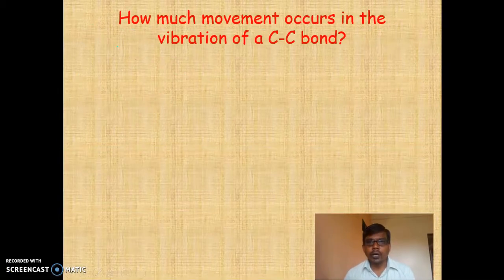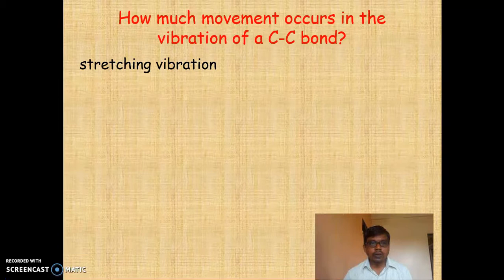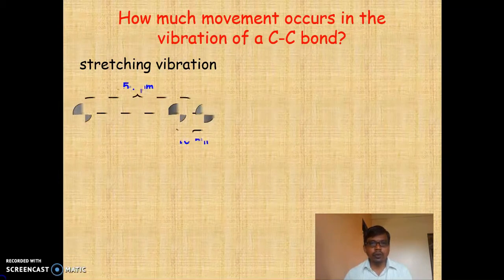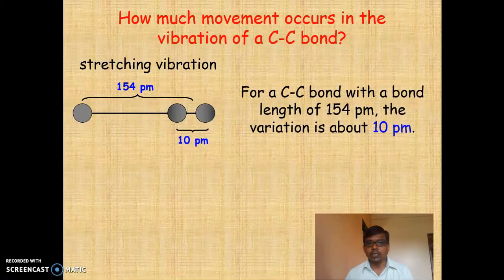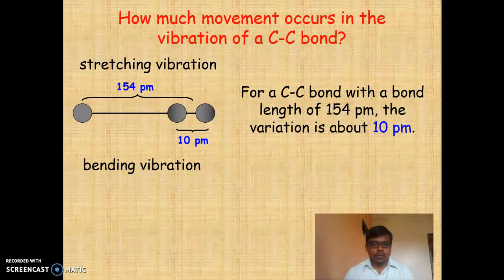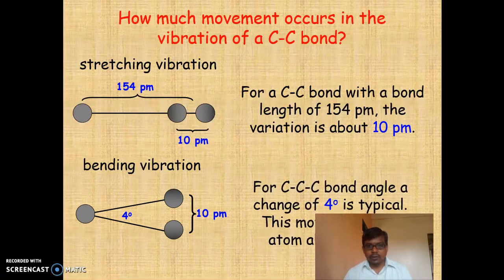How much movement occurs in the vibration of a carbon-carbon single bond? In case of stretching vibration, if the bond length is about 154 picometers, the length increases by about 10 picometers. In case of bending vibration, the bond angle will change by about 4 degrees.